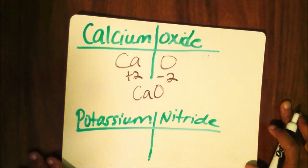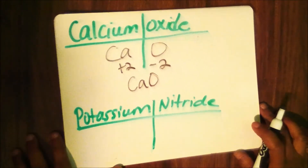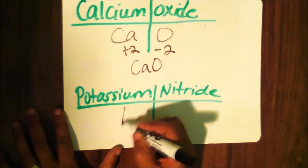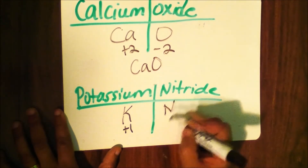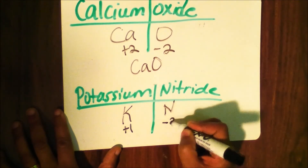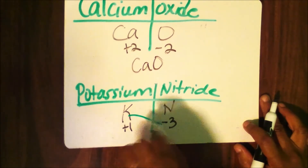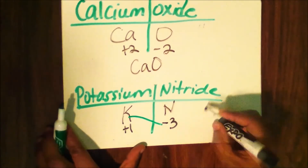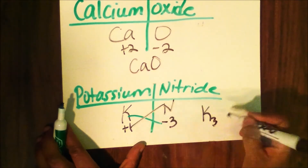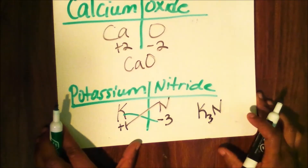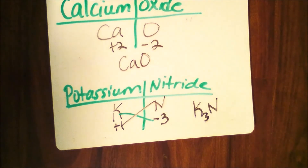The next example is potassium nitride. Potassium has a plus 1 charge on the periodic table, and nitrogen has a negative 3. They're going to swap — potassium is going to take the 3, and nitrogen is going to take the 1. But again, the 1 is understood, so you get K₃N.